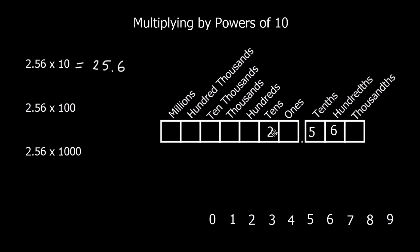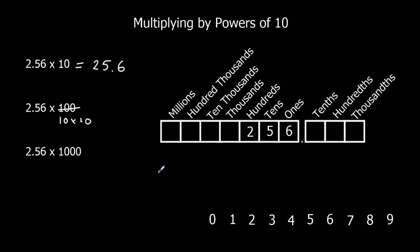Going back to 2.56, this time we multiply by 100, which is the same as 10 × 10. So we move the digits up two times. We get 2 hundreds, 5 tens, and 6 ones, which is 256. We don't need to add any extra zeros because the number makes sense as it is.